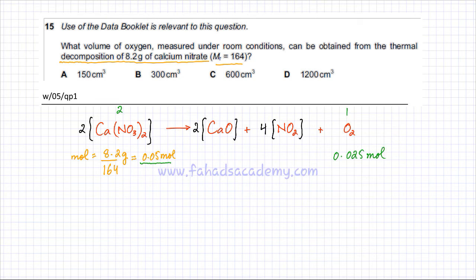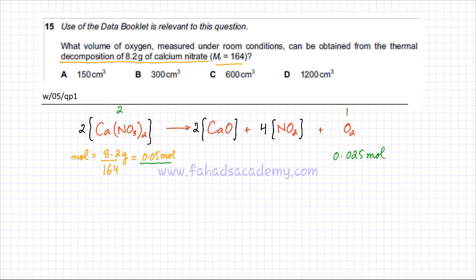We now have the moles of oxygen and need to find the volume of oxygen gas. Volume of gas equals moles of gas times molar volume, which is 24 dm³ at RTP. The moles is 0.025 moles of oxygen gas. 1 mole of a gas occupies 24 decimetre cube, so 0.025 moles is going to occupy 0.025 multiplied by 24.